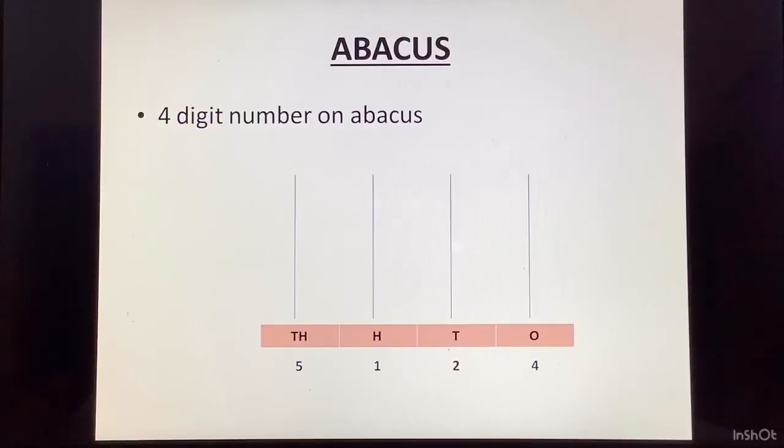Now, we come to Abacus. You have already done 4 digit numbers on Abacus. Let us quickly revise it. Here, the number given is 5124. So, 4 is there in the ones place. So, how many beads will we put in ones place? 4. Alright. Now, tens place, we have 2. So, we will put 2 beads in the tens place. Hundreds place, we have 1. So, 1 bead in hundreds place. And, thousands place, we have 5. So, 5 beads in thousands place. This, you have done in class 3 also.